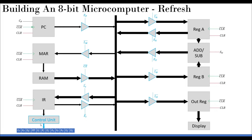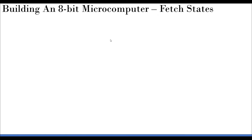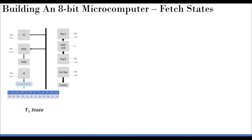As discussed, each clock cycle falls into a fetch cycle or execute cycle, each having three sub-cycles (T1, T2, T3). With each clock change, all 12 control signals must be issued with specific values. For the fetch cycle T1 state, the objective is to transfer the content of the program counter to the memory address register.